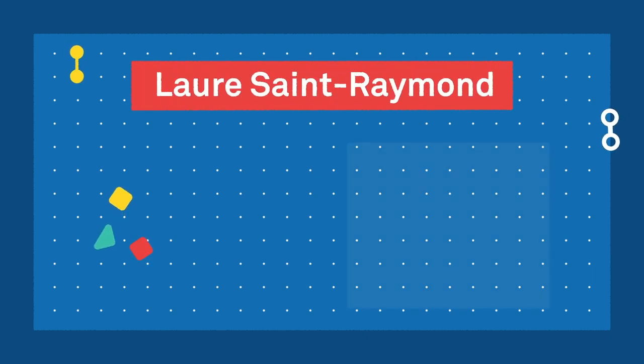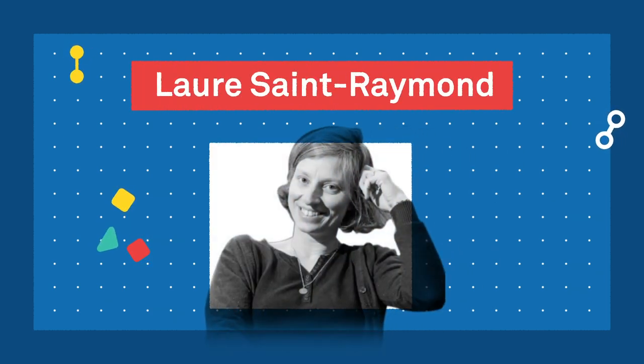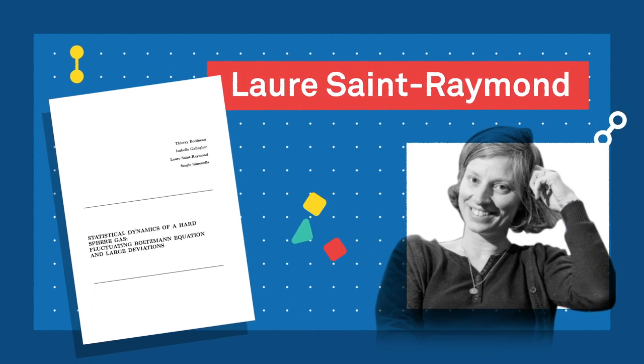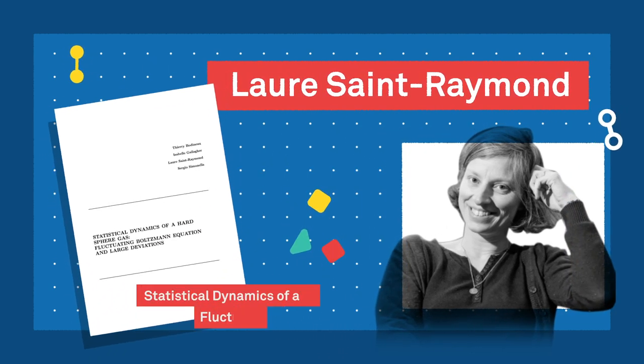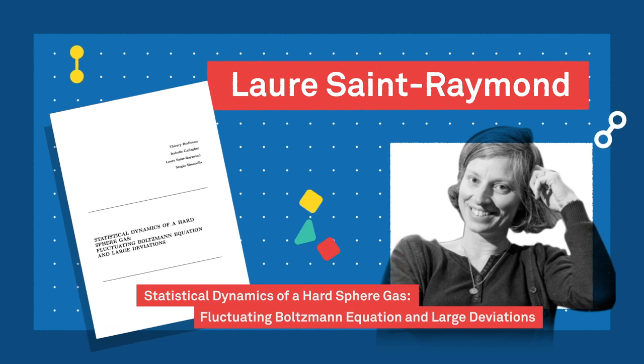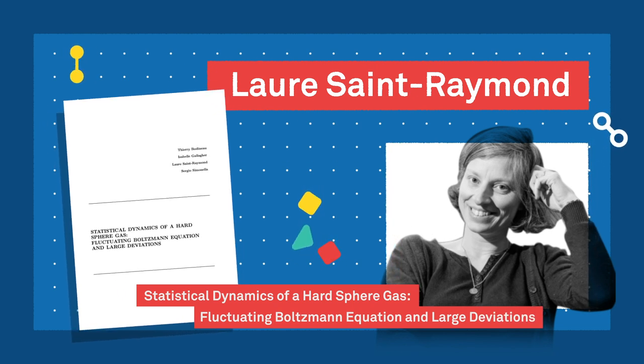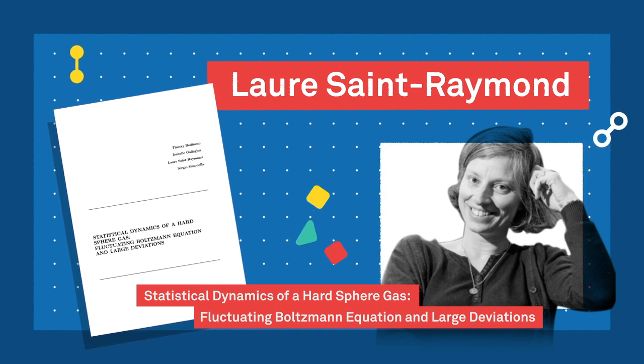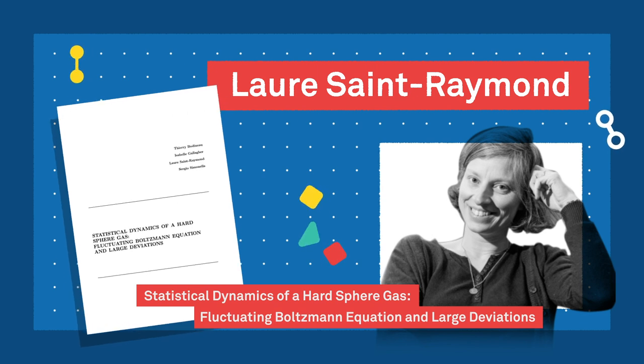More recent work by Laura Saint-Ramon and her colleagues has cast new light on chaos. They showed how deviations from the Boltzmann equation are explained by correlations in the sequence of collisions, thereby providing a statistical description of the gas beyond the Boltzmann equation, including the prediction of rare events.